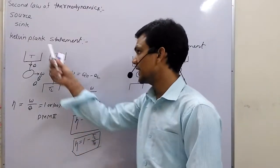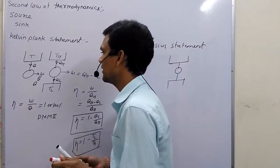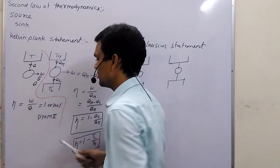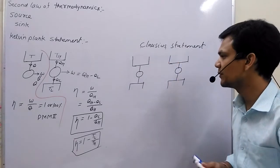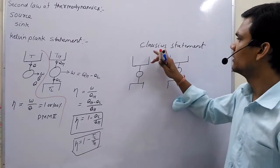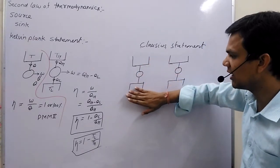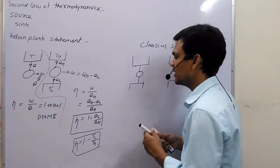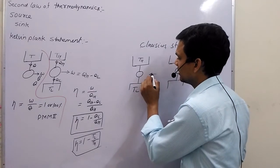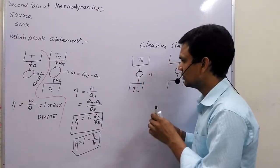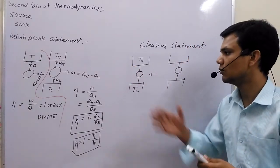According to the Kelvin-Planck statement, the two-reservoir case is the possible case, while the single-reservoir case is the impossible case, which is not achievable in practical life. Now, if we talk about the second statement, that is given by Clausius. According to the Clausius statement, it is impossible to transfer heat from a lower temperature to a higher temperature without supplying any external energy to a source or engine.